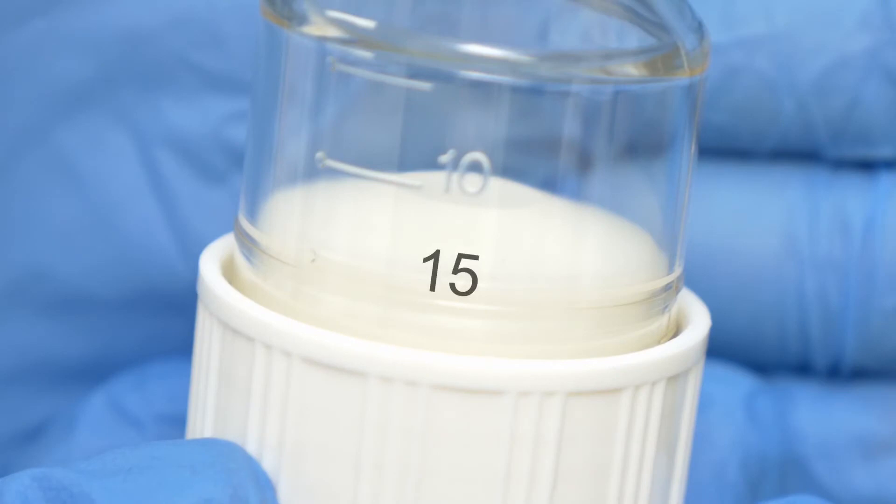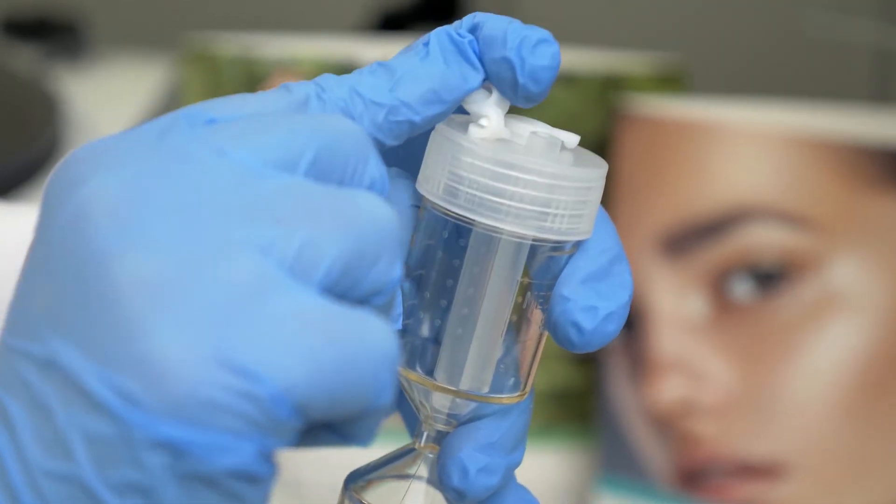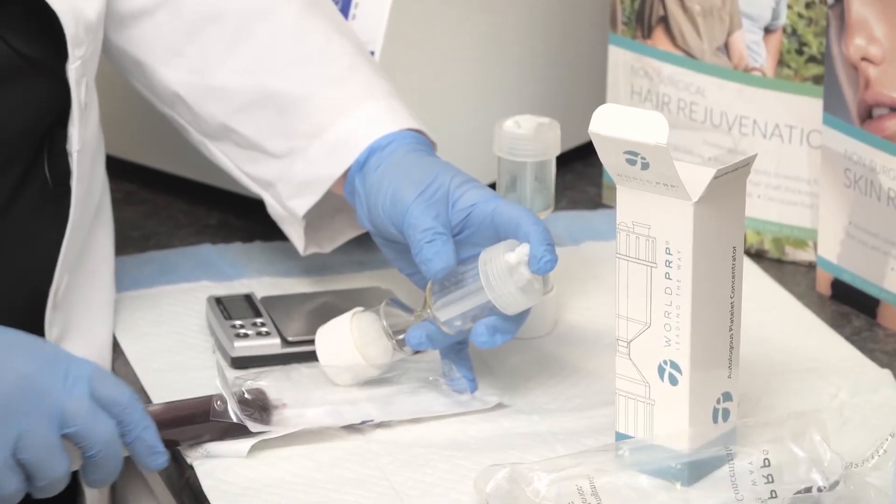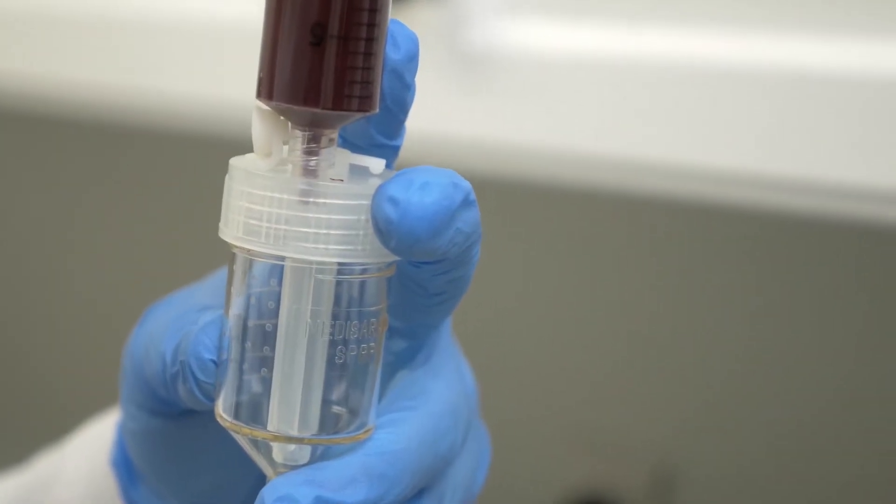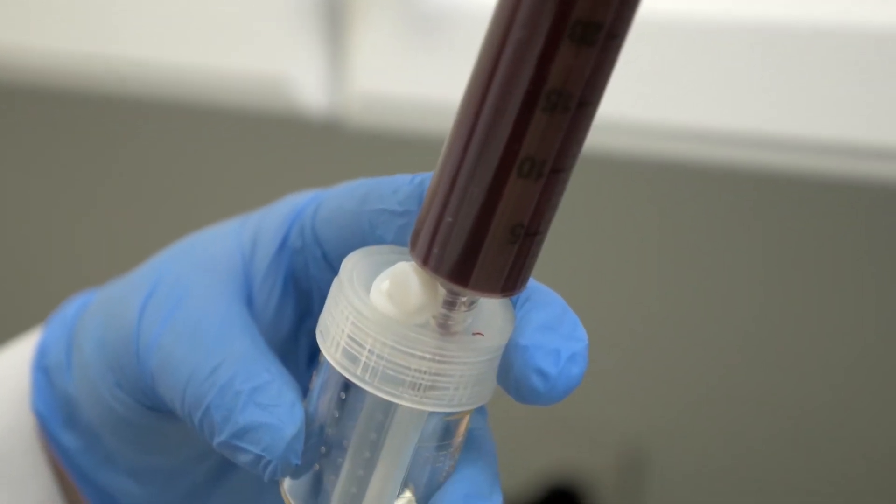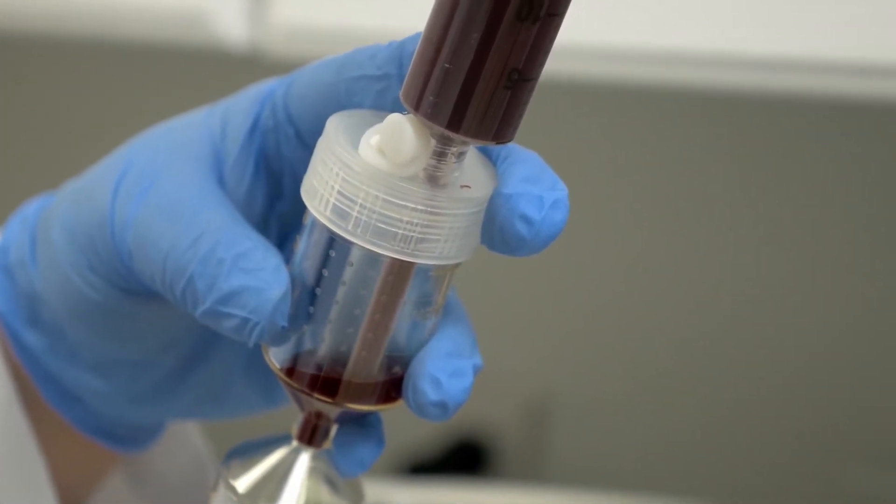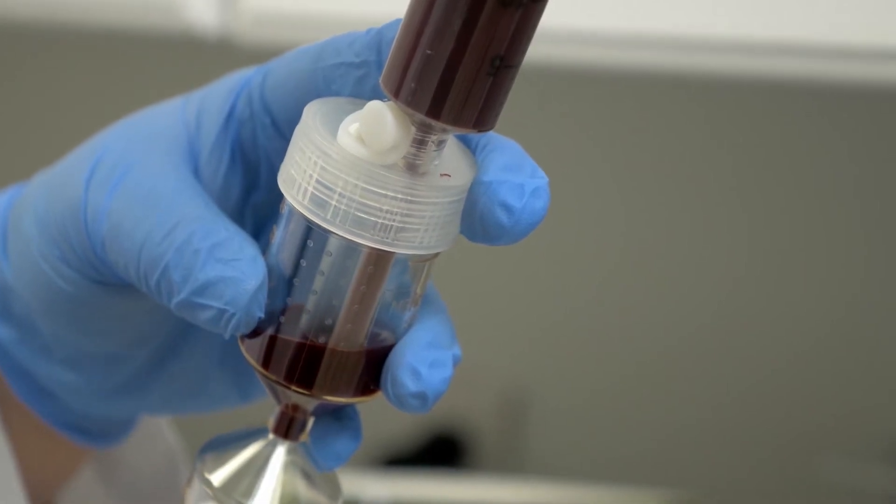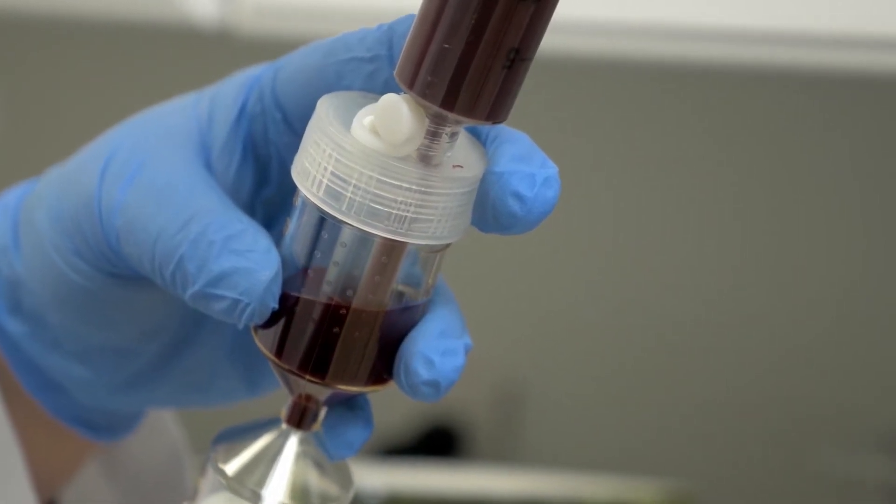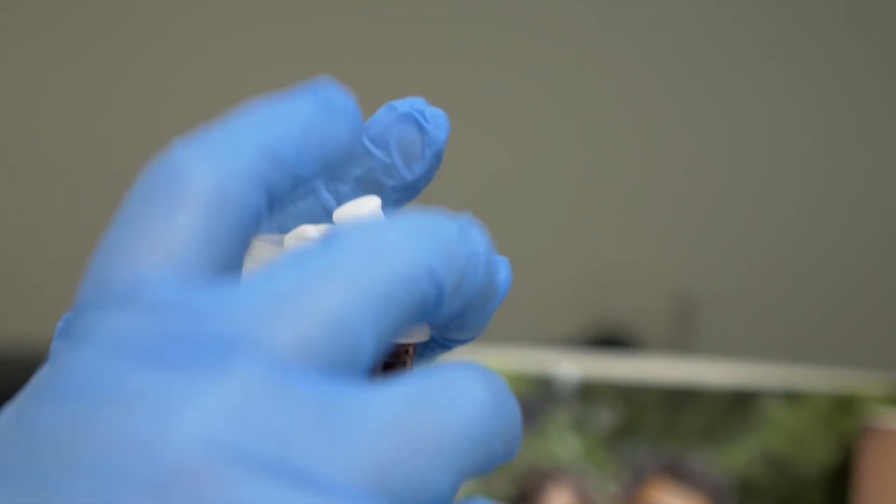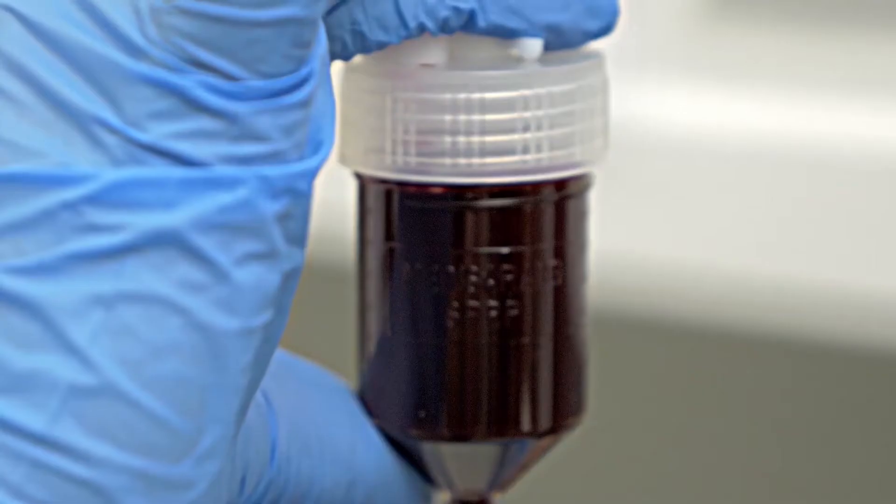Open outer port cap and transfer the whole blood into the World PRP tube using the 30 ml syringe without a needle. Do not push the plunger with force. Lean the tube at a less than 45 degree angle and gently transfer the whole blood.